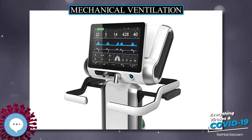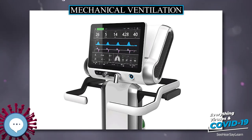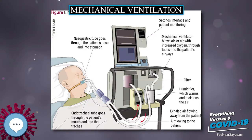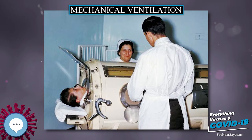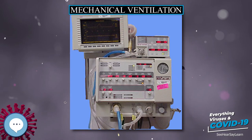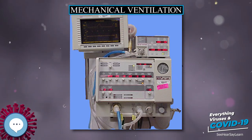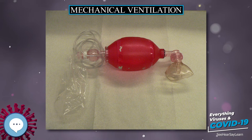Intubation can be either an endotracheal tube inserted through the natural openings of the mouth or nose, or a tracheostomy inserted through an artificial opening in the neck. In other circumstances, simple airway maneuvers, an oropharyngeal airway or laryngeal mask airway may be employed. If the patient is able to protect their own airway and non-invasive or negative pressure ventilation is used, an airway adjunct may not be needed.